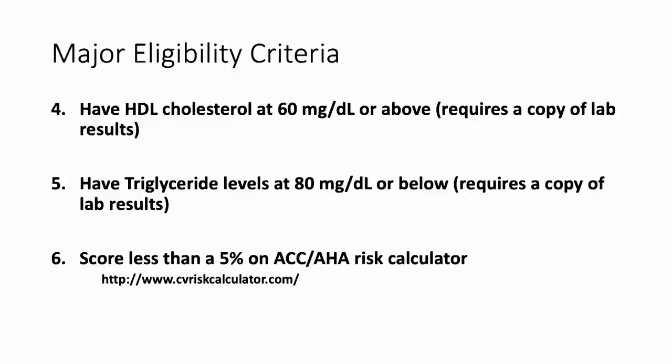Four: you have an HDL cholesterol of 60 mg/dL or above, and you have triglycerides of 80 mg/dL or below. And last of the major criteria is that you score less than 5% on the ACC/AHA risk calculator at cvriskcalculator.com. I've just gone through the six major criteria, and that'll probably knock out most people. But there is a lot of criteria beyond that — you need to contact the Lundquist Institute to find out more.